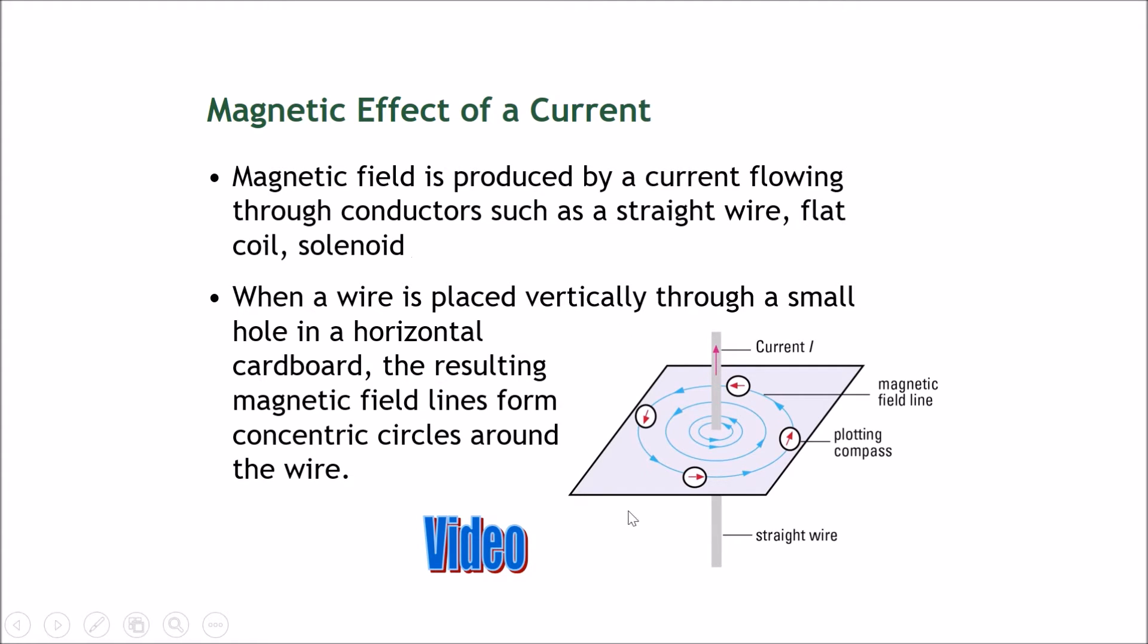Now let's do this example. When a wire is placed vertically through a small hole in a horizontal cardboard, like this, if you poke it through here and the cardboard is flat like this, there will be resulting magnetic field lines, and they will form concentric circles around the wire.